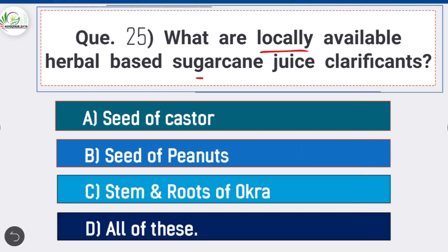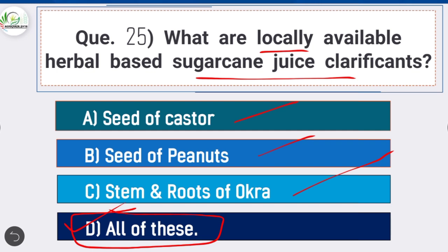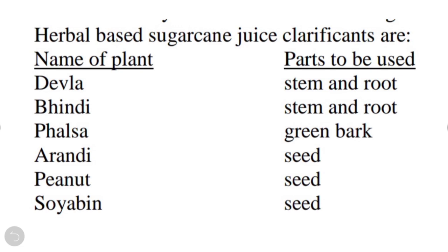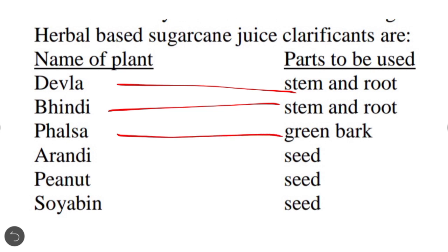Question 25: Locally available herbal-based sugarcane juice clarifications are — option D is correct: all of these — seeds of castor, seeds of peanuts, and stem and roots of okra. Herbal-based clarifications include: devla plant (stem and roots), windy plant (stem and roots), falsa plant (green bark), RND plants (seeds), peanut (seeds), and soybean (seeds).